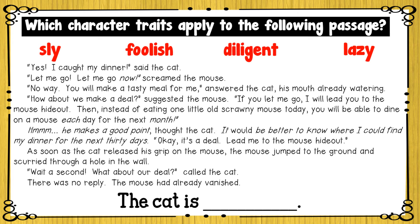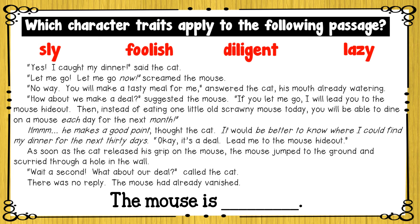'He makes a good point,' thought the cat. 'It would be better to know where I could find my dinner for the next 30 days. Okay, it's a deal. Lead me to the mouse hideout.' As soon as the cat released his grip on the mouse, the mouse jumped to the ground and scurried through a hole in the wall. 'Wait a second — what about our deal?' called the cat. There was no reply. The mouse had already vanished. From this passage, we can infer that the cat is foolish and the mouse is sly.